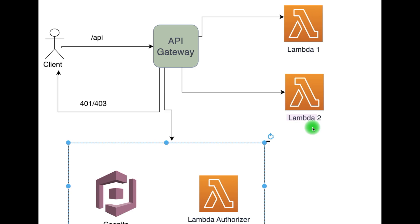Cognito is an AWS user management service. Whenever any request comes to the API Gateway, the user will be validated within the Cognito pool. The second approach is the lambda authorizer, where we define one lambda specific to authentication. That lambda does authentication based on different inputs — for example, headers (that could be a token or any other header) and query parameters. Based on that information, the lambda authorizer validates the request. Once the user is validated, API Gateway calls the specific service. If authentication fails, API Gateway returns 401 and 403 errors.